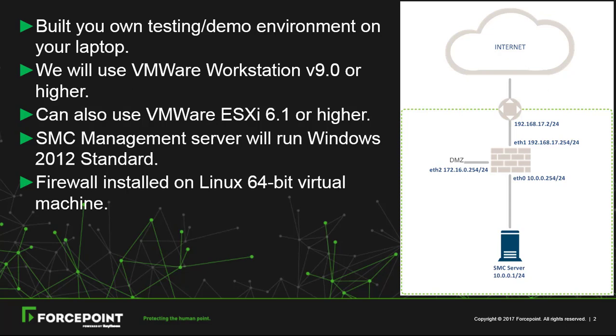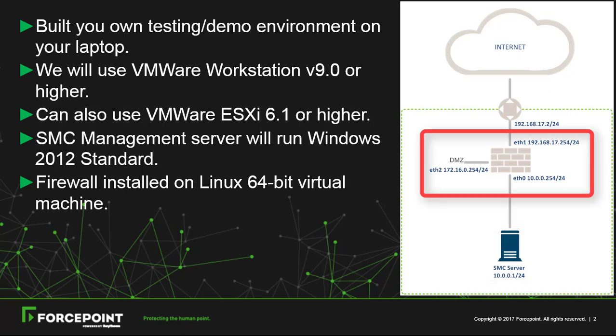On the right side, you have the initial network topology we will build, and while progressing with the sessions we can update it accordingly. SMC Server will be installed on a Windows Server 2012 virtual machine and will have the IP address 10.0.0.1/24, which will be the local network in the lab. The Virtual Next Generation Firewall will be installed in a Linux 64-bit virtual machine and configured with three network interfaces. Ethernet 0 will be connected to the local LAN and has the IP address of 10.0.0.254. Ethernet 1 will be the external interface and connected to the NAT interface of VMware Workstation to get access to the Internet.